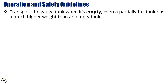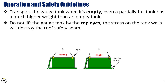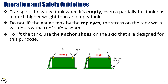When transporting the gauge tank, always ensure it's empty. Even a partially full tank can weigh significantly more than an empty one, making it difficult and potentially dangerous to move. Never lift the tank by the top lifting eyes, as doing so places stress on the tank walls and can damage the roof safety seam, which is critical for safe operation. Instead, always use the anchor shoes on the skid — they're specifically designed to support the tank's weight during lifting and transportation.